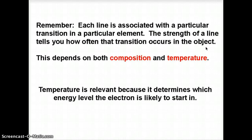So what would affect how often a transition occurs? Well, first off, the composition is obviously important. If you don't have any hydrogen in an object, then you're not going to get any lines from hydrogen. But the other thing that will affect this is temperature. And that's going to be the big thing that we're going to talk about in this lecture and the next one, is how does line strength relate to temperature.